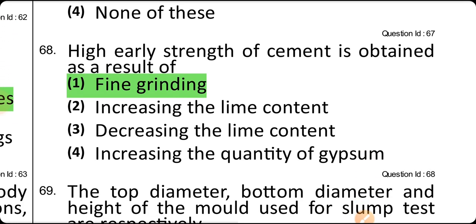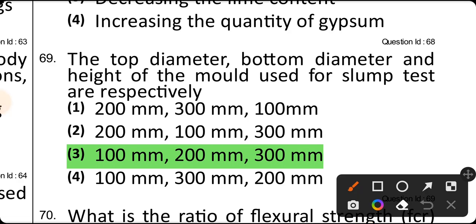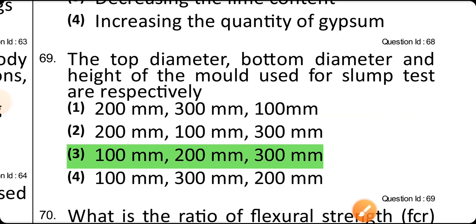High early strength of cement is obtained as a result of fine grinding. The top diameter, bottom diameter, and height of the mould used for the slump test are: top diameter 10 cm, bottom diameter 20 cm, and height 30 cm.